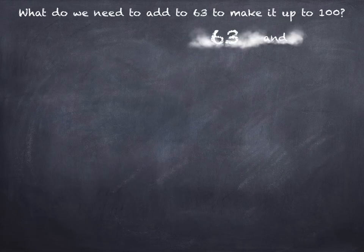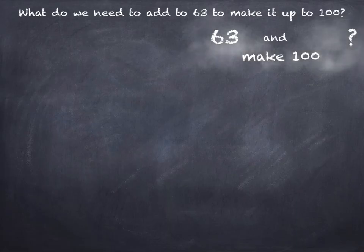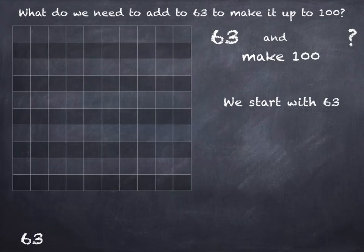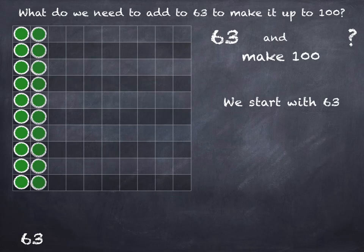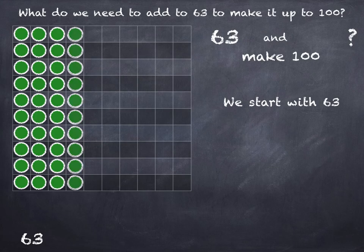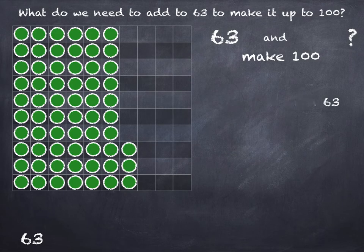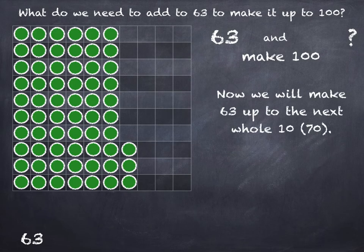What do we need to add on to 63 to make it up to 100? 63 and what make 100? We start with 63 — that's 6 tens and 3 units — and then we make 63 up to the next whole 10, which in this case is 70. So what do we have to add on to 63 to get to the next whole 10? Again, you can use your number bonds for this.